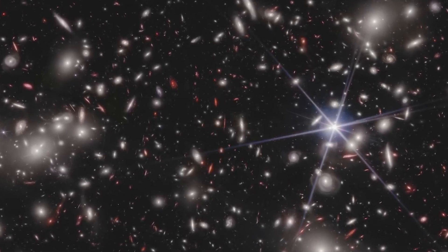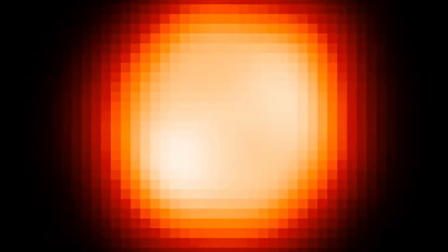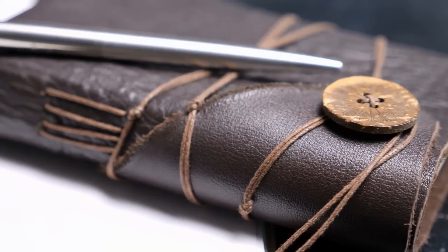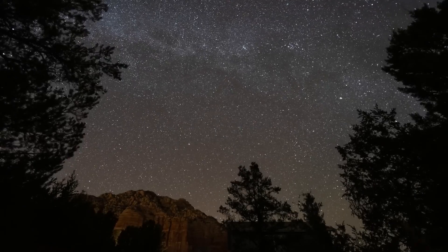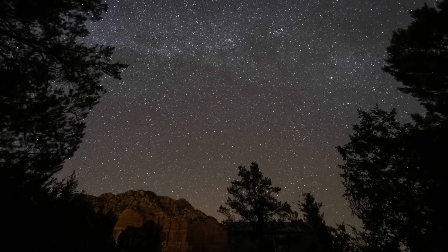This supernova was so bright that it was visible in the daytime sky for several weeks. Kepler was astonished to note in his diary that a star had been born that shone almost as brightly as the moon.